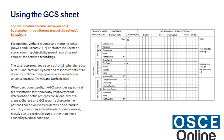When used consistently, the GCS provides a graphical representation that shows any improvement or deterioration of the patient's conscious levels at a glance. Charted on a GCS graph, a change in the patient's condition is easily identified, leading to accuracy in monitoring altered levels of consciousness, mostly due to cerebral trauma rather than those caused by medical conditions.